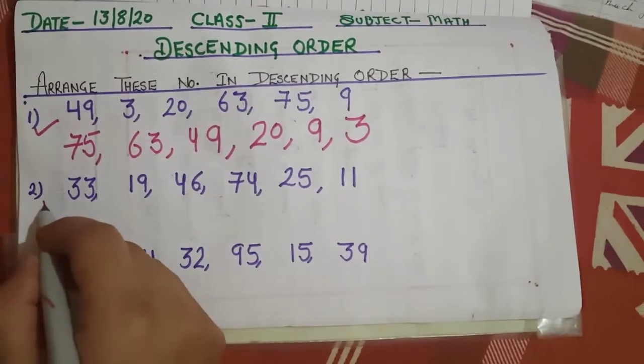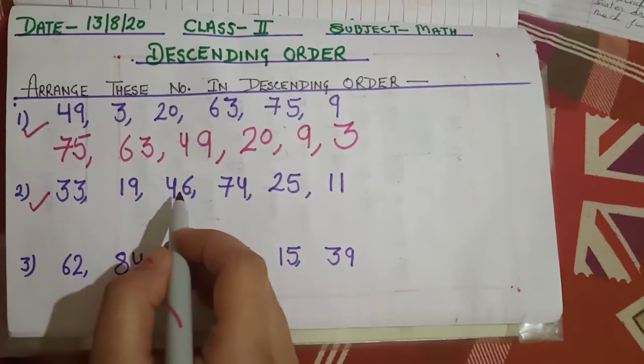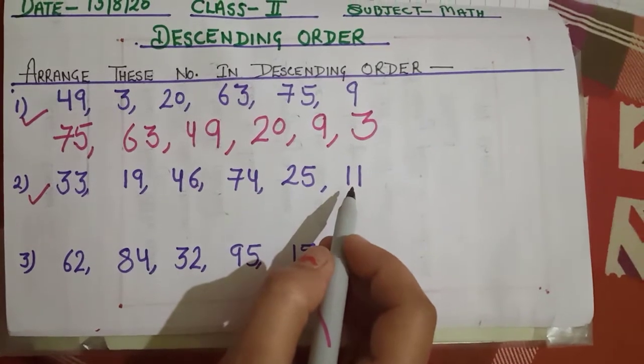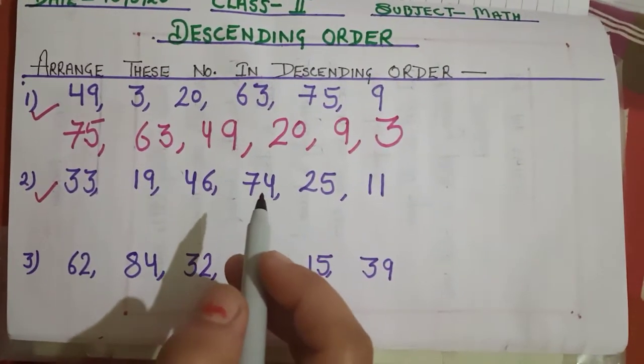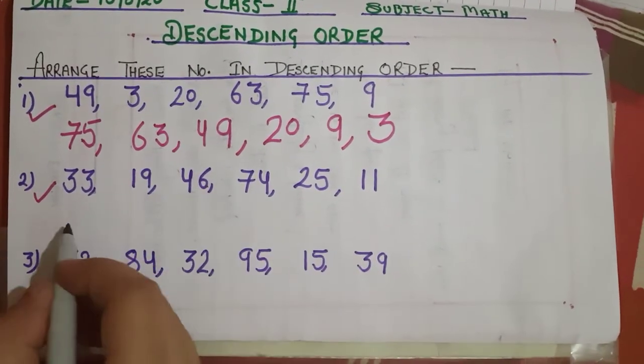Now your second sum, 33, 19, 46, 74, 25, and 11. Now tell me, which is the greatest number? Yes, 74.